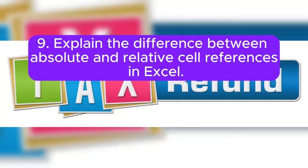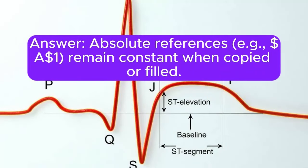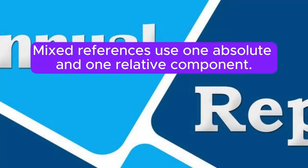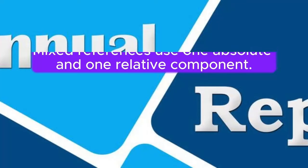Question 9: Explain the difference between absolute and relative cell references in Excel. Absolute references, for example $A$1, remain constant when copied or filled. Relative references, for example A1, adjust based on the new cell location. Mixed references use one absolute and one relative component.